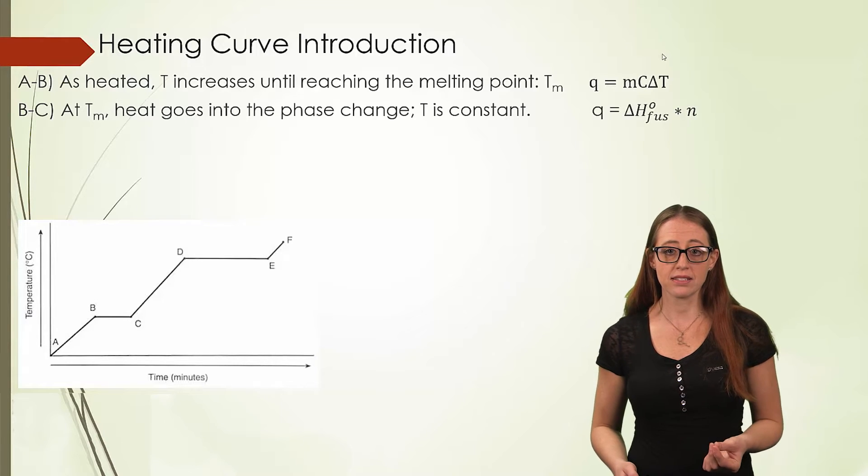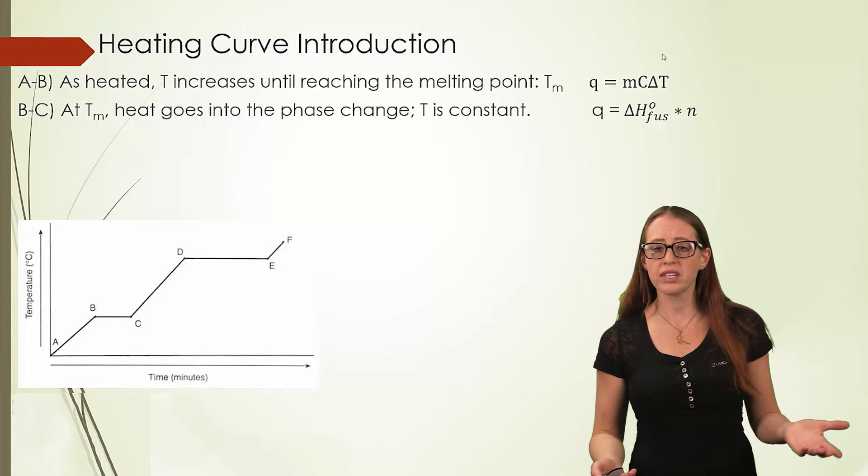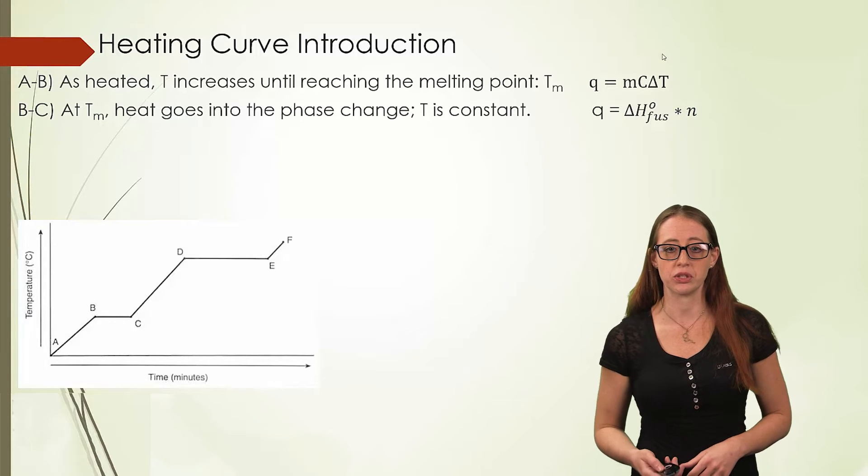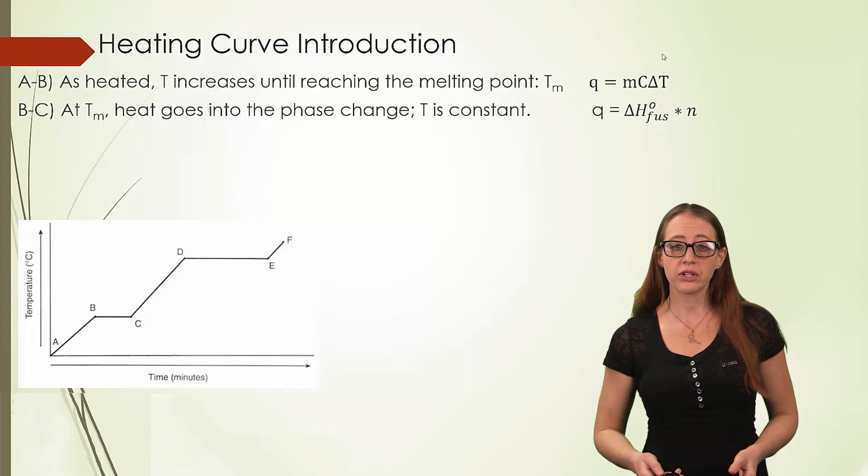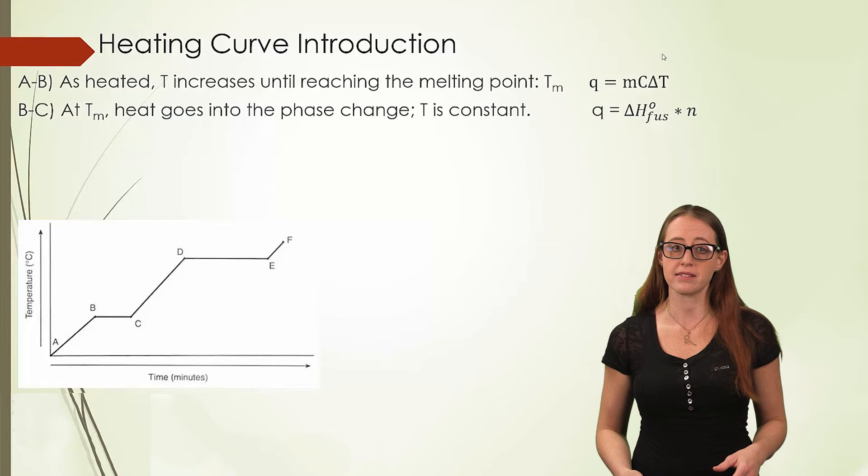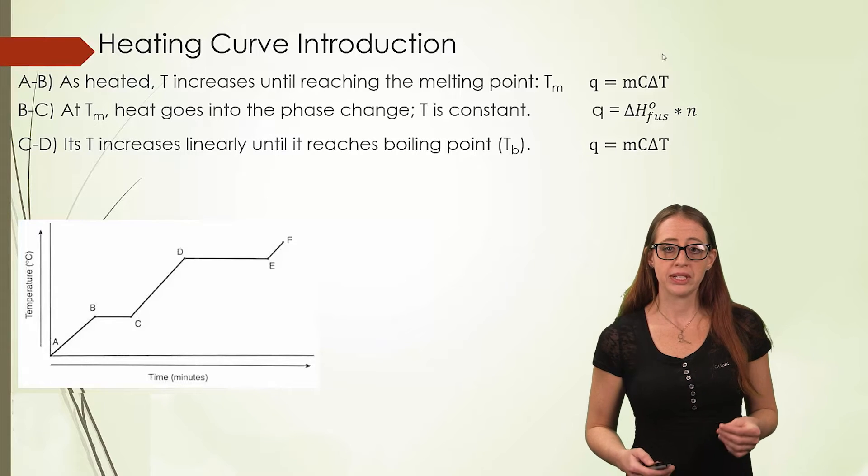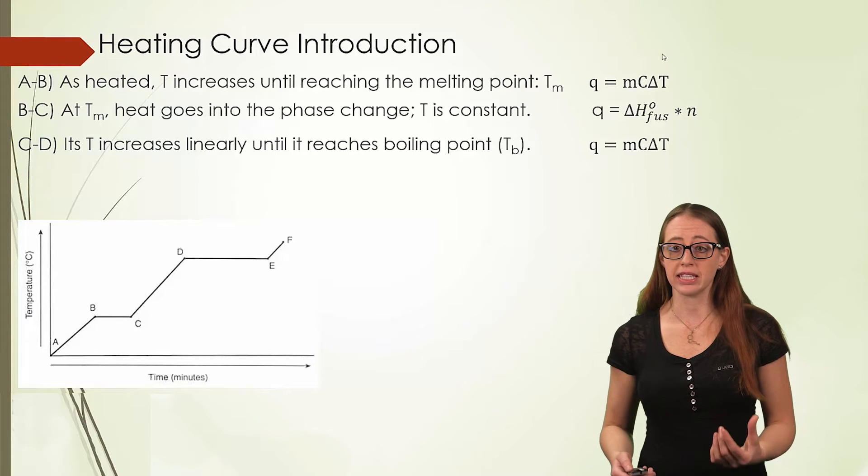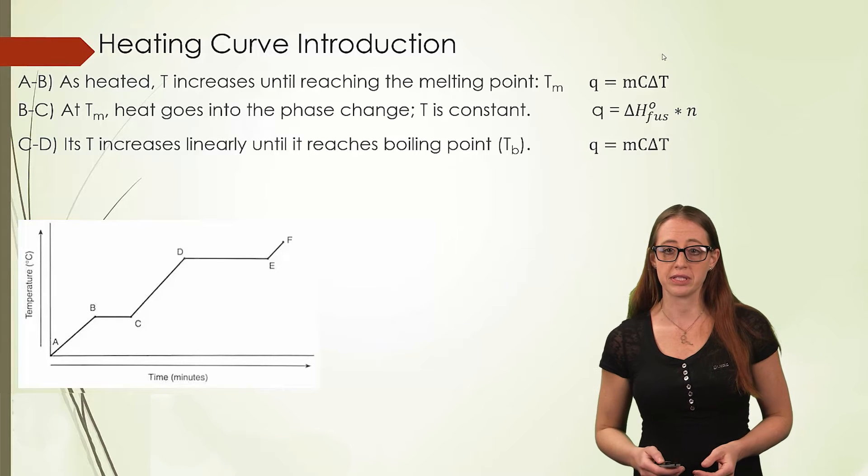Then, as the solid melts, we use the heat of fusion multiplied by the moles, or the mass depending on whatever units it's given to you in. Then, as we heat the liquid, we are going back to Q equals MC delta T, since we are within one phase. This time, we need to make sure to use the specific heat of the liquid. Remember, solids, liquids, and gases all have different specific heats.